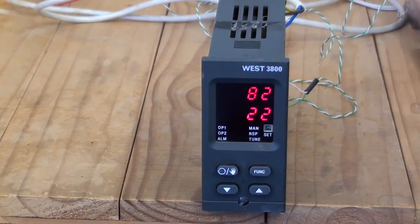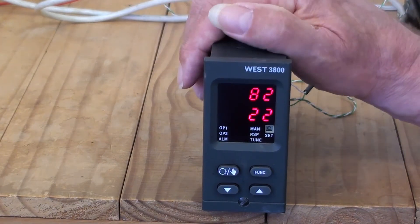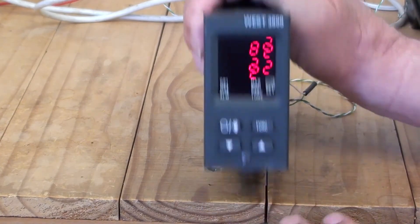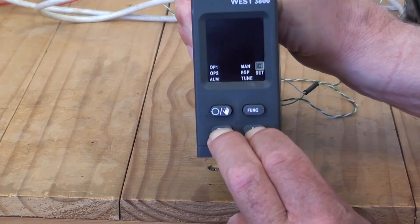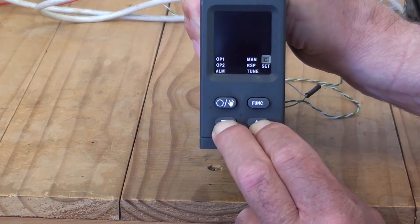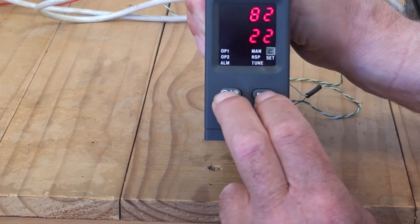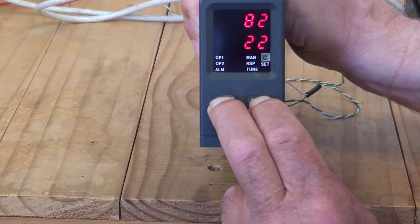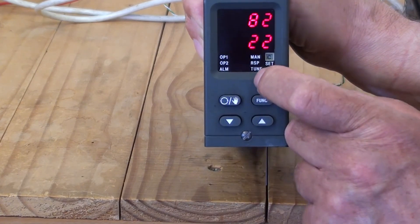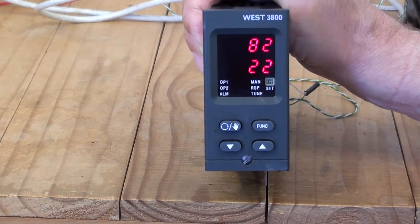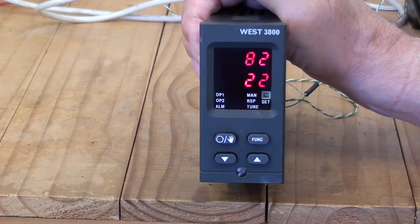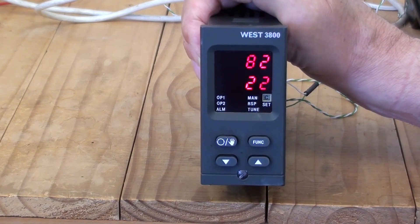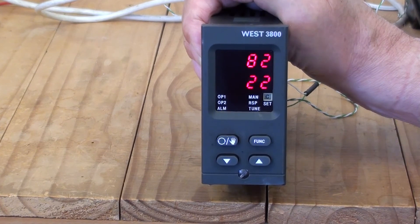The controller has a pre-tune and self-tune feature. To enter the pre-tune and self-tune, press the up and scroll arrows together and hold for about five seconds until the set light flashes. Now press the auto manual and the function key together. The set light goes off and the tuning light goes on. The controller is now going through the pre-tune feature and once it's finished it will then go to self-tune.